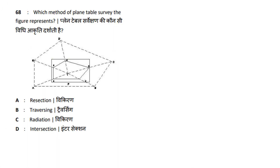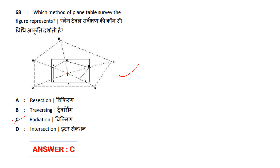Which method of plane table survey does the figure represent? Options: Traversing, Radiation, Intersection. The answer is option C — Radiation. If you want to plot other points from a central station, you can plot a polygon using radiation. So answer option C is Radiation.